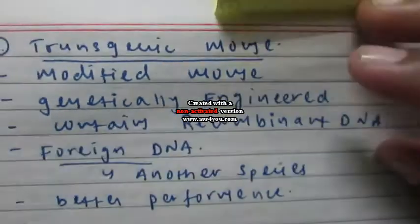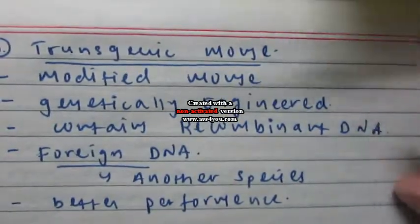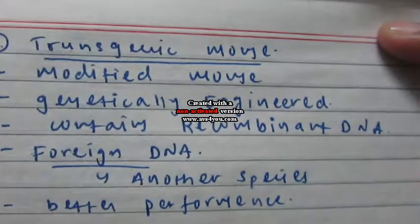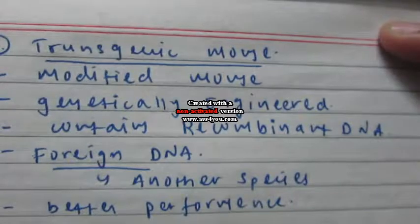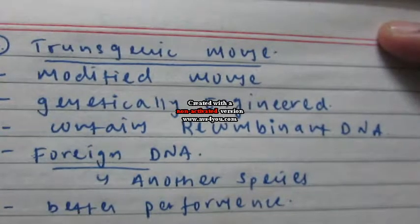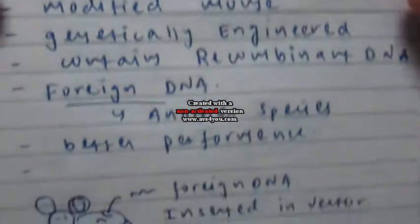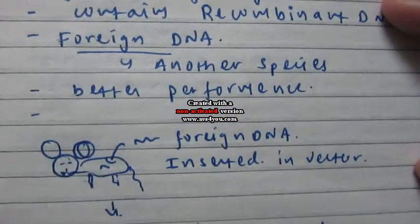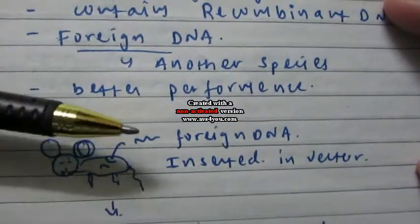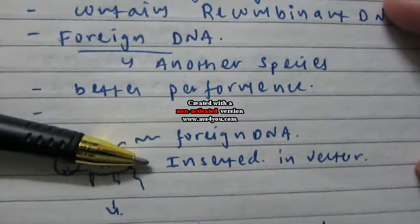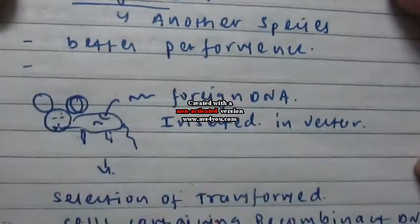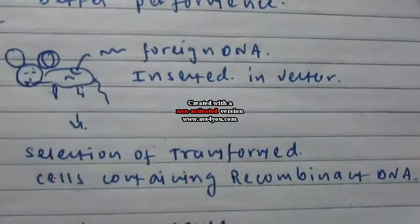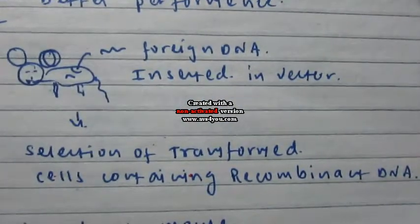The first one is transgenic mouse. Transgenic mice are genetically engineered mice in which foreign DNA is inserted, which is taken from different species. Foreign DNA is inserted via a vector or plasmid, and then transformed cells are selected which contain a recombinant or trans DNA.